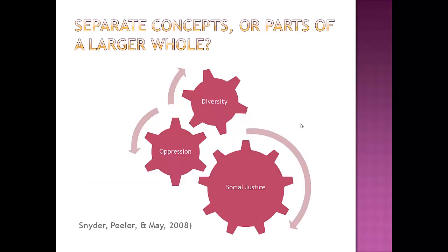This brings me to my understanding of how all these concepts go together. They are all interrelated and not separate concepts. Understanding the sources of oppression by understanding diversity will enable a student to practice toward the goal of social justice. They're all moving parts that lead to the end goal of social justice. That concludes the discussion on the definitions, history, and current presence of these concepts.